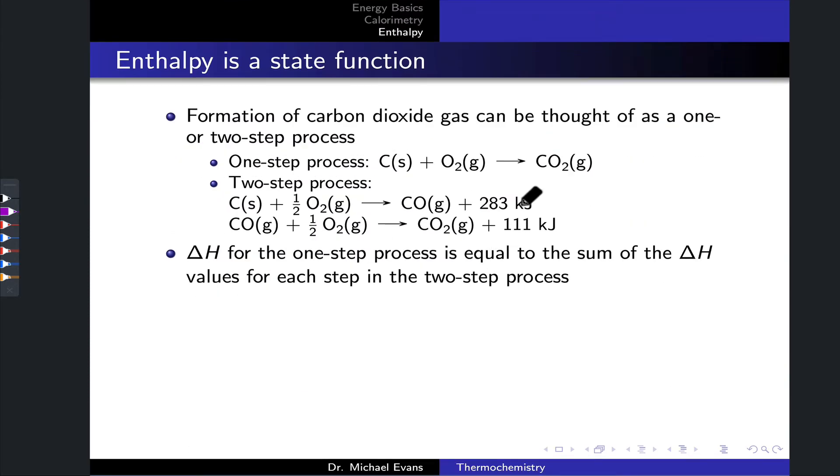As a more chemical example, let's consider the formation reaction of carbon dioxide gas. We can think of this as a one-step process where carbon and oxygen combine directly in a single step to form CO2 gas. Or we can think about it as a two-step process where carbon reacts with one of the oxygens in step one to form carbon monoxide. And maybe we know from previous measurements or we've measured ourselves the enthalpy associated with this process; it's exothermic by 283 kilojoules.